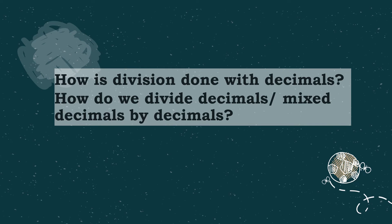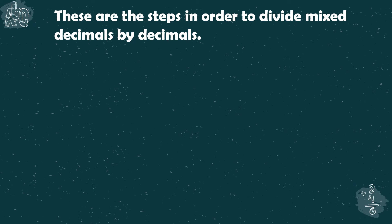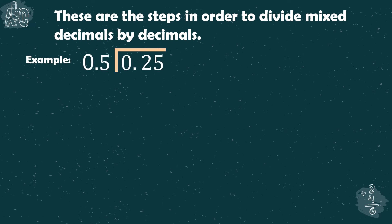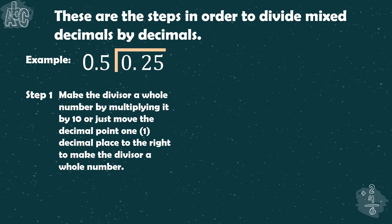How is division done with decimals? How do we divide decimals or mixed decimals by decimals? These are the steps in order to divide mixed decimals by decimals. Step number 1 is to make the divisor a whole number by multiplying it by 10, or just moving the decimal point one place to the right.